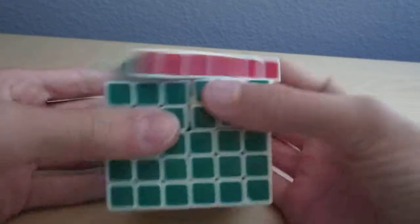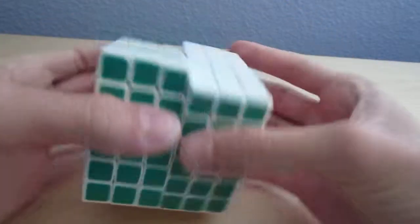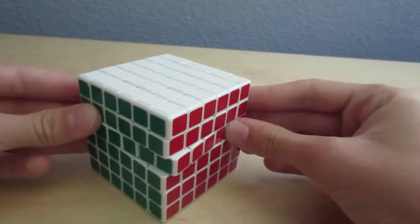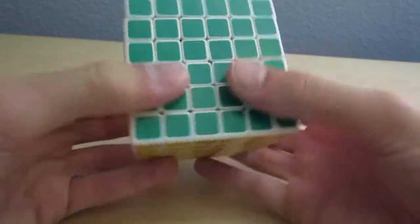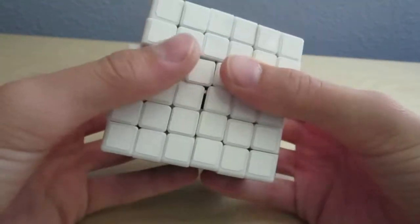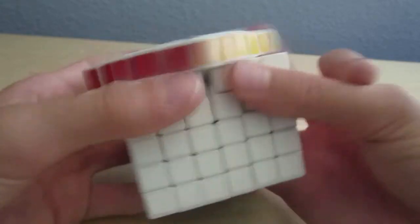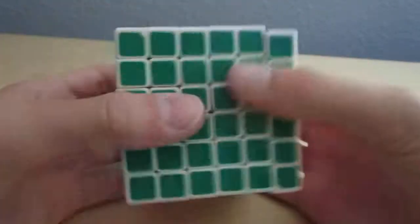And now 6x6. Probably as you guessed it, it's a Shengshou. I have a YJ but it just will not stop falling apart on me no matter what I do, no matter how tight I get it. But I think it's because I'm using the wrong springs in it.